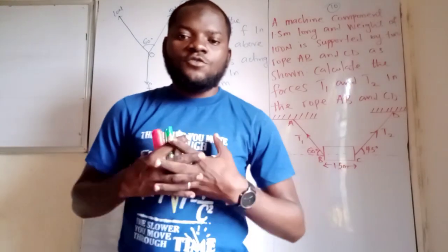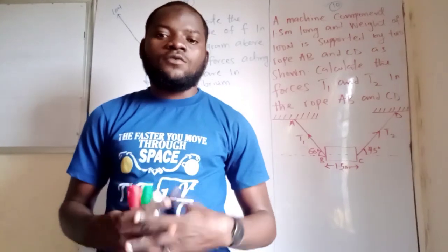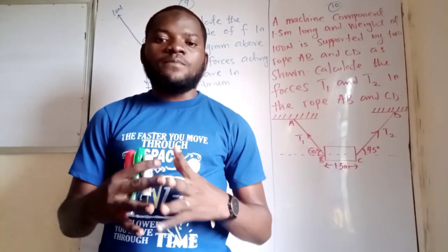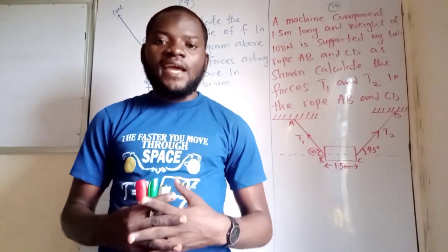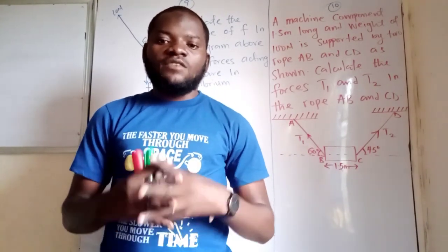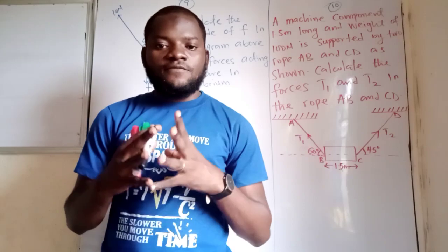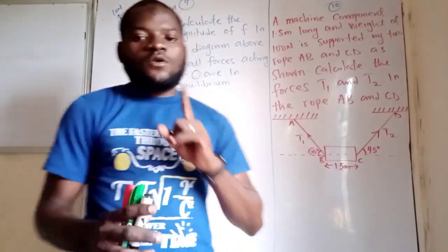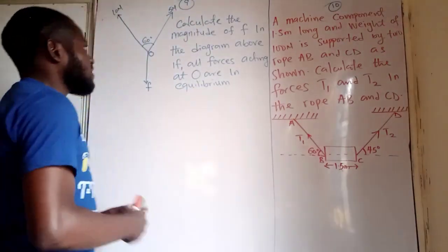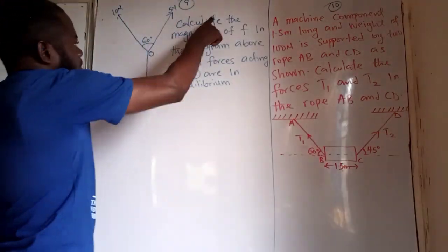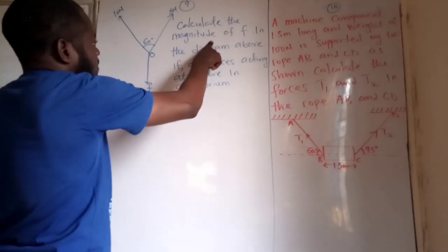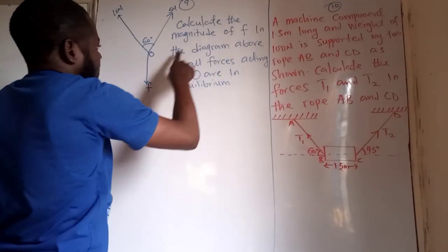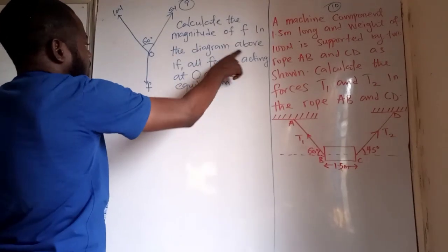Hello guys, welcome to my channel. Today we want to look at problem 9 and 10 of the same topic: vectors and scalars. Question 9 states: calculate the magnitude of F in the diagram above.